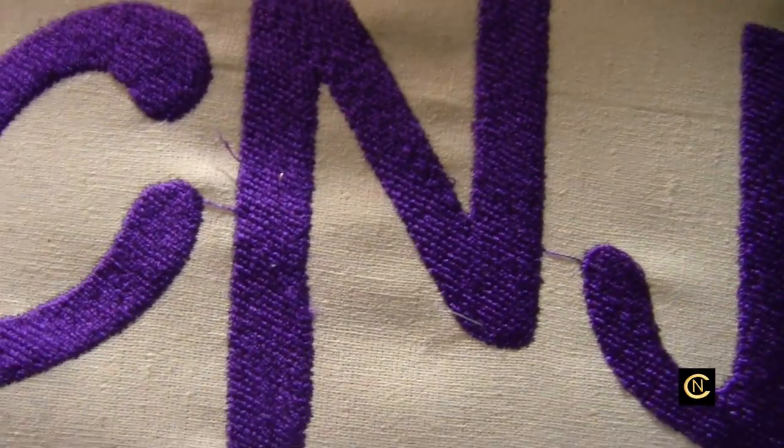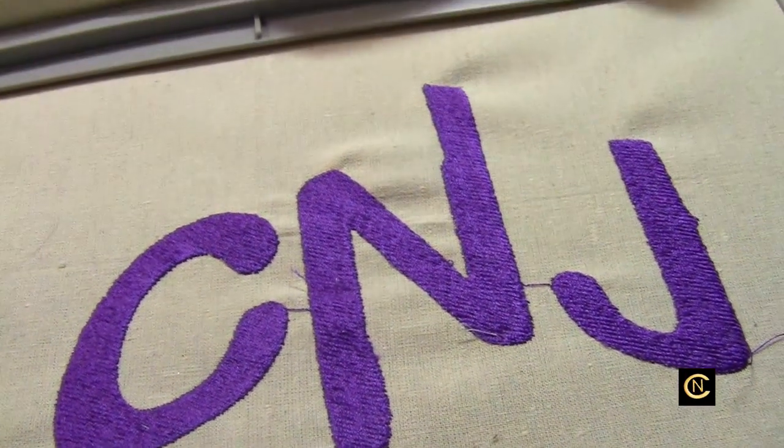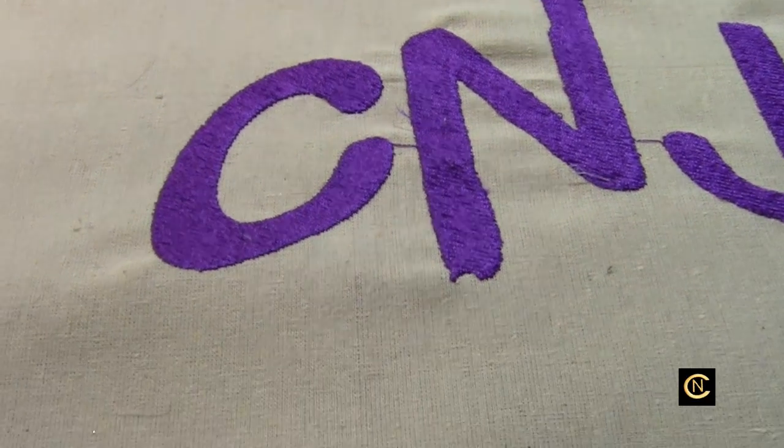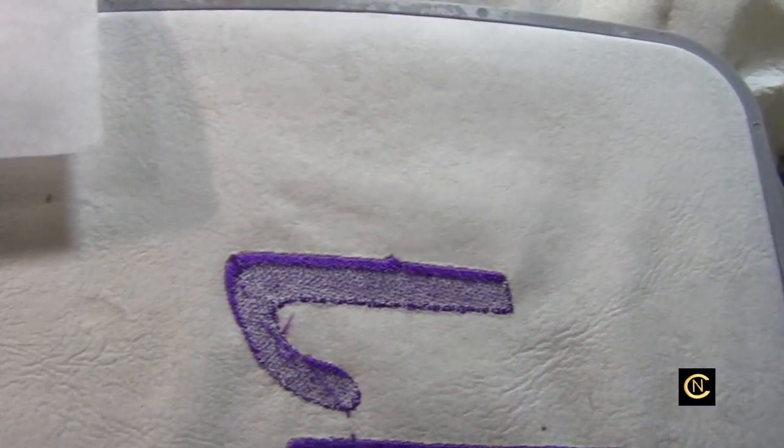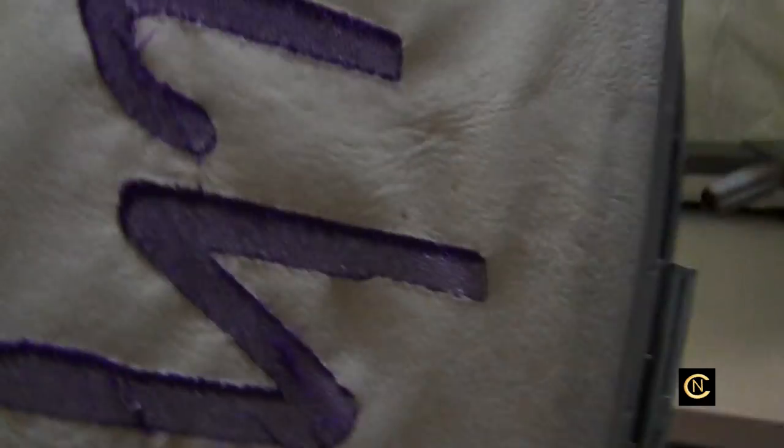You see this? You see the puckering and the wrinkling? Why do you think that is? I've got this fabric with iron-on stabilizer but it's still puckering.